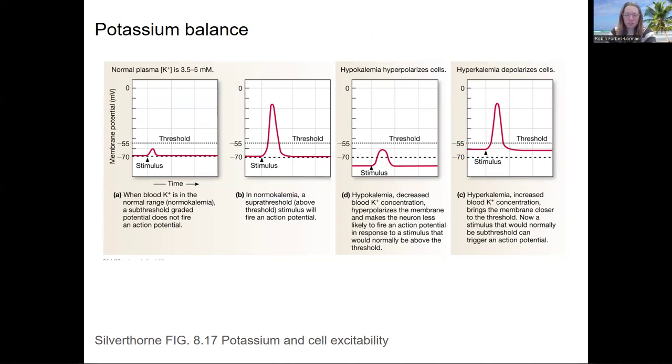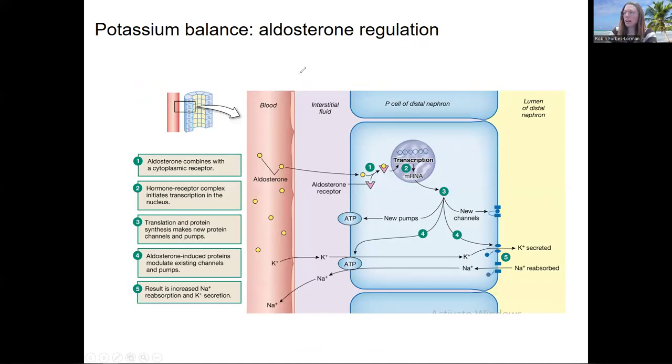Aldosterone acts at the distal convoluted tubule and some of the collecting duct. Here is our nephron tube, and here's the blood. Aldosterone is secreted by the adrenal gland, which is on top of the kidneys, and travels through the bloodstream to bind to receptors. It's a cholesterol derivative, so it's able to enter the cell and initiate transcription. We know that hormones able to enter the cell can initiate transcription and translation of new proteins. New channels are inserted into the membrane - this is a potassium pump.